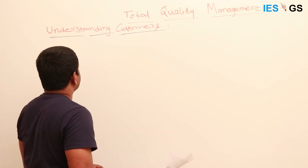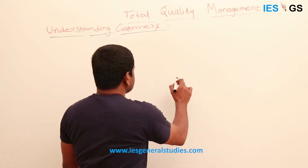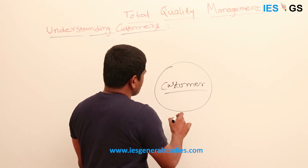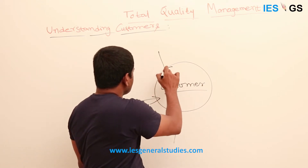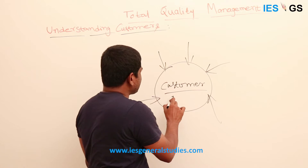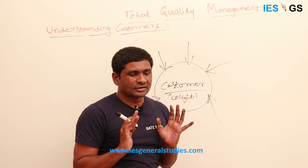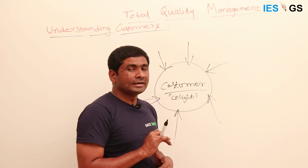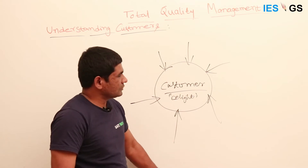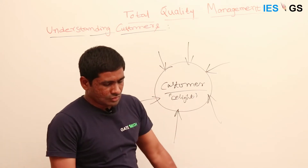The next important aspect in Total Quality Management is understanding the customer. The customer is at the center of our discussion. Whatever tools you are using, everything is to satisfy the customer. The customer should be delighted — you should feel 'Wow'. When you can bring that sense of delight, the customer will act as a brand ambassador for your product. That is why it is always important to understand the customer while doing quality management.